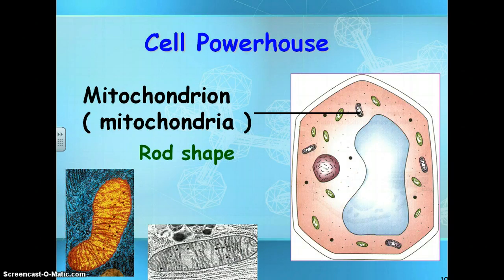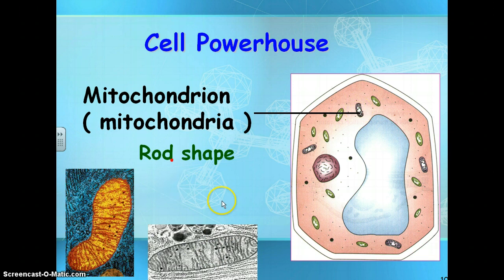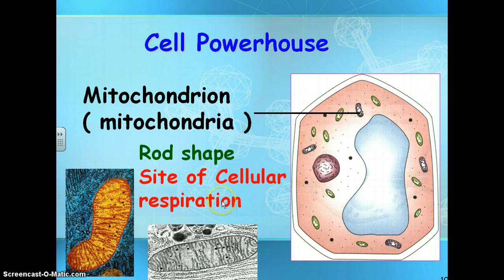Here we have the mitochondria. It's rod-shaped, and you can see all the little folds in the mitochondria. It's the site of cellular respiration. Remember, mitochondria transform energy in food into energy the cell can use.